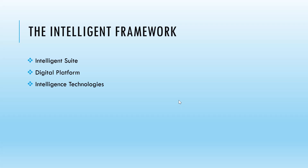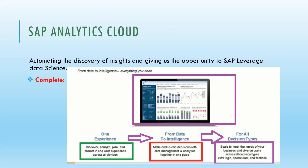For this intelligent framework, there are three components: intelligence, intelligent digital platform, and intelligence technologies. SAP Analytics Cloud automates the discovery of insights and leverages data science. It is a complete tool where users can discover, analyze, plan, and predict in one unified experience. It takes data end-to-end and can make analysis and provide decisions to business users.